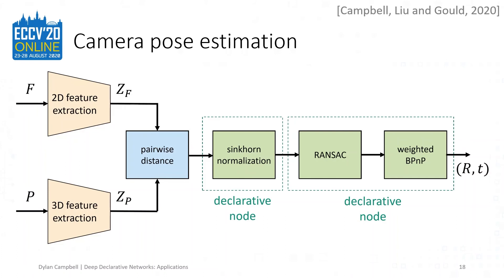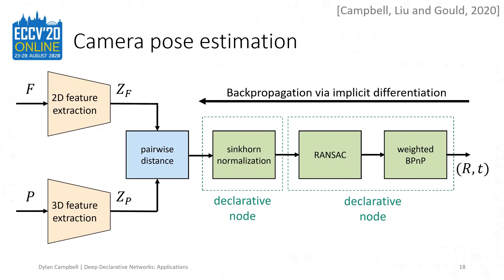We are combining standard neural layers with declarative layers to instantiate the traditional camera pose estimation pipeline of feature extraction, feature matching, and optimization in a single neural network. The input is a set of 2D and 3D point coordinates, from which pointwise features are extracted using ResNet-like network layers. Feature matching is then performed by computing the pairwise distance between point features and using the Sinkhorn algorithm to obtain a joint correspondence probability matrix. Finally, a probability-weighted blind PNP objective function is optimized from a RANSAC initialization to estimate the camera rotation and translation. By using declarative nodes, we can backpropagate through all of these optimization layers, seamlessly integrating RANSAC and state-of-the-art nonlinear PNP solvers into an end-to-end deep learning framework.